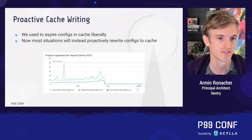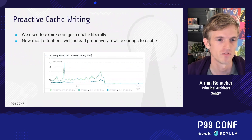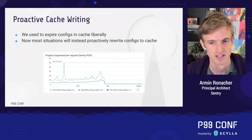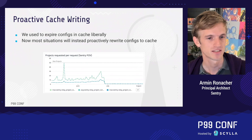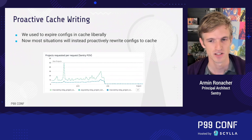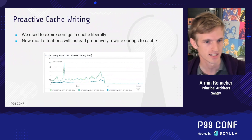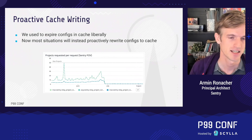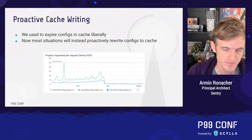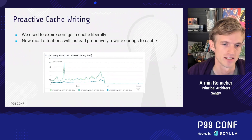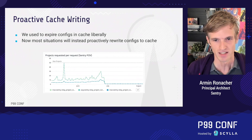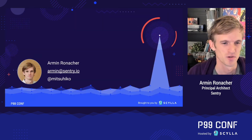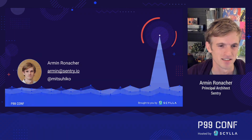Our cache system has become an active communication channel. We now proactively populate the cache, so misses are very rare. It's not the cleanest-looking solution, but it's pragmatic and has tremendously helped the system scale — we no longer have to wait for data to arrive via HTTP requests. With that, I'm happy to answer any questions.